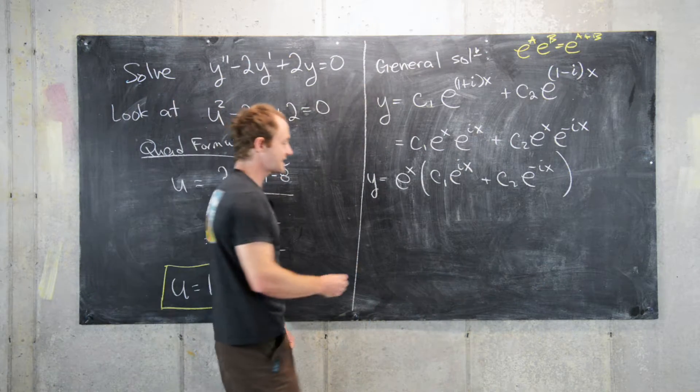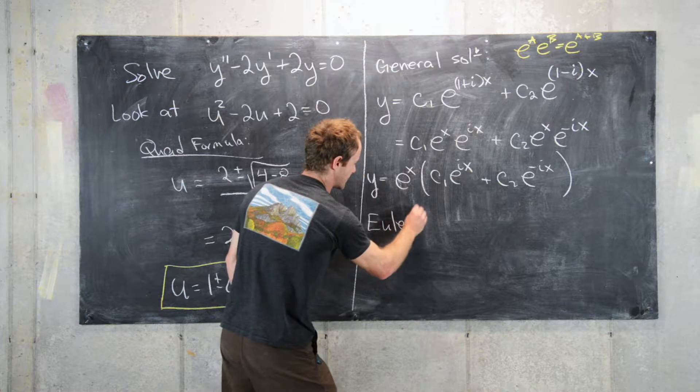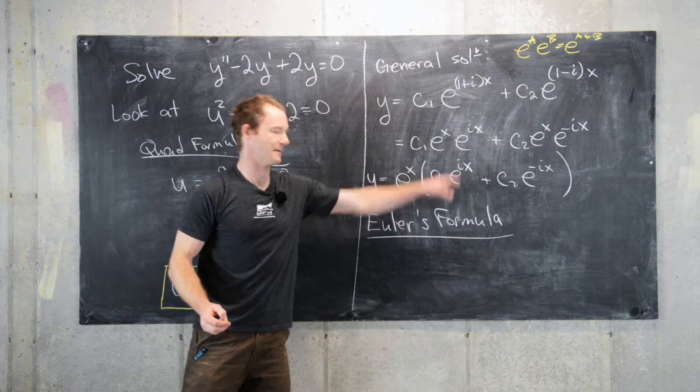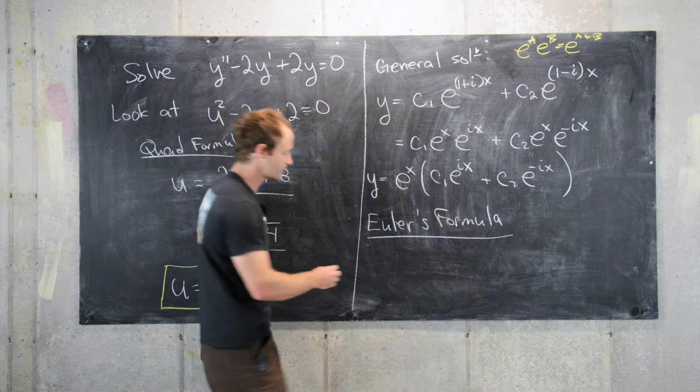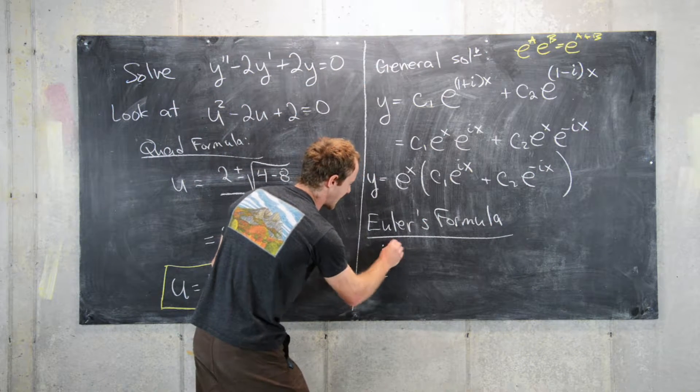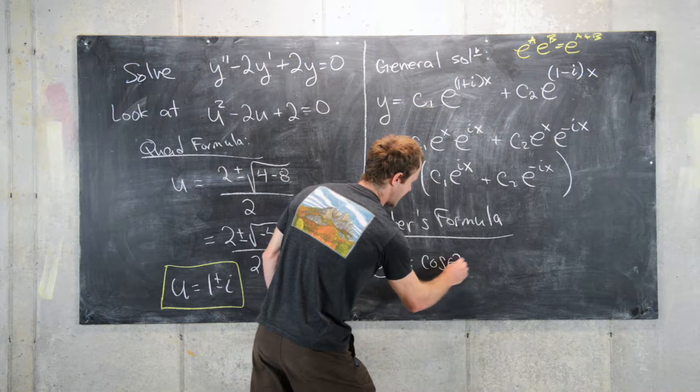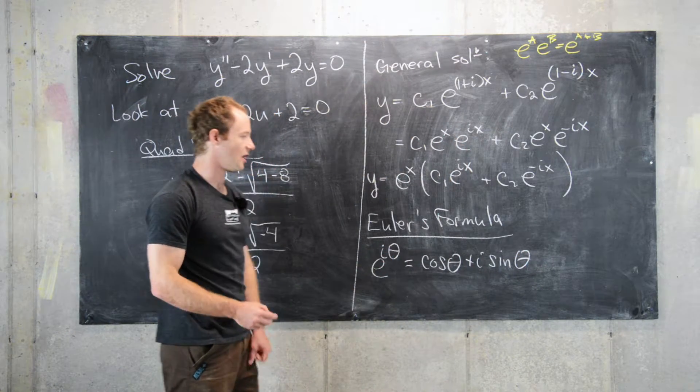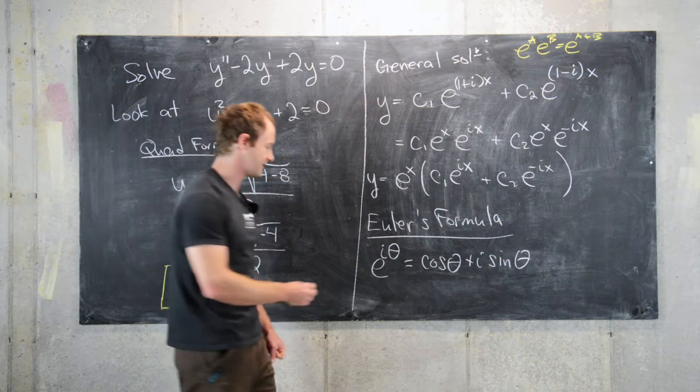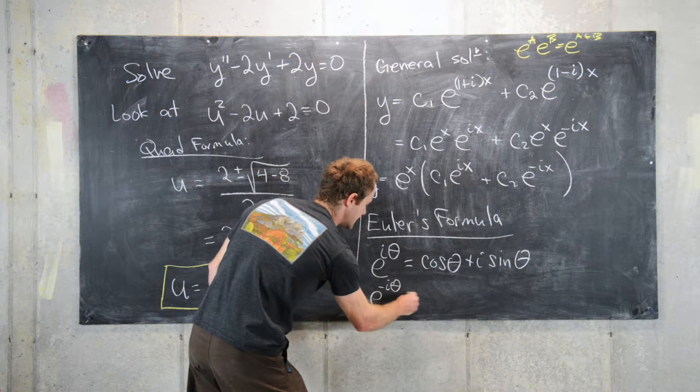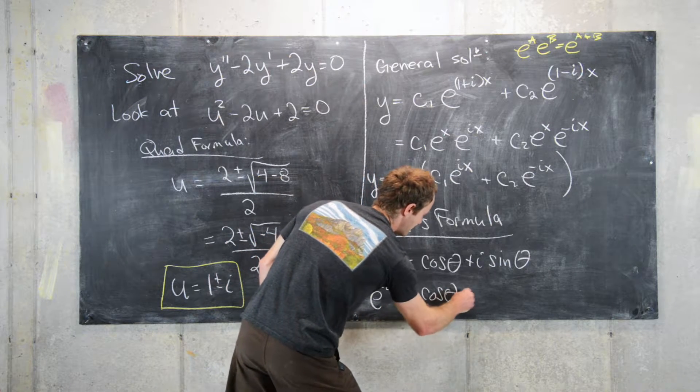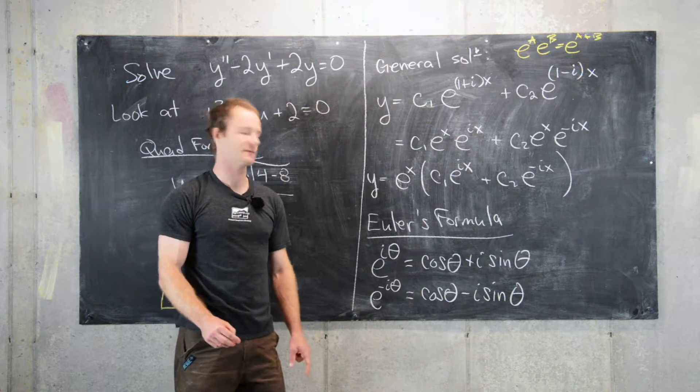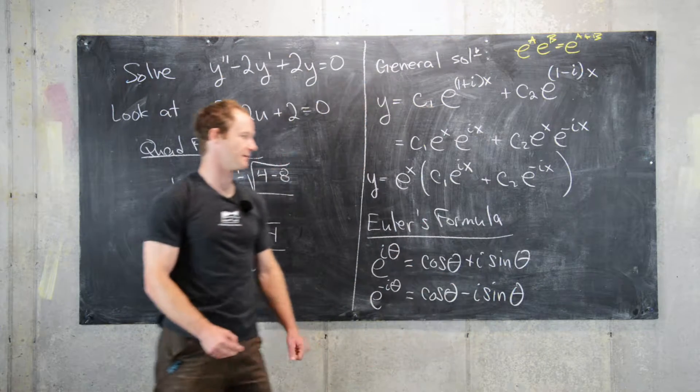Okay. Good. And next step is we want to remember Euler's formula, which allows us to deal with imaginary exponents of the exponential function. So Euler's formula gives us e to the i theta is equal to cosine theta plus i sine theta. And likewise, this is true for all values of theta, so if we set theta equal to negative theta, we'll get e to the minus i theta equals cosine of theta minus i sine of theta. Where since cosine is an even function, we can replace cosine of minus theta with cosine of theta. And since sine is an odd function, we can bring the minus sine out.